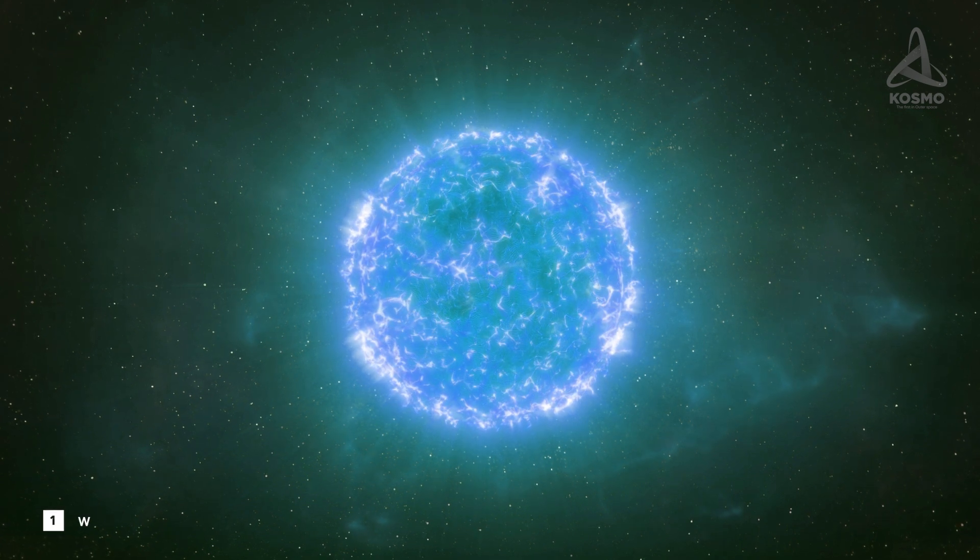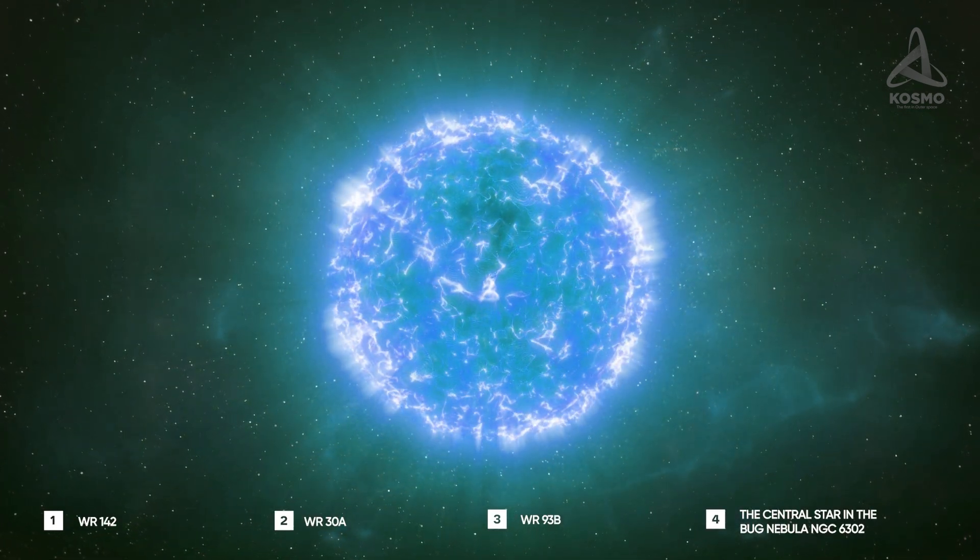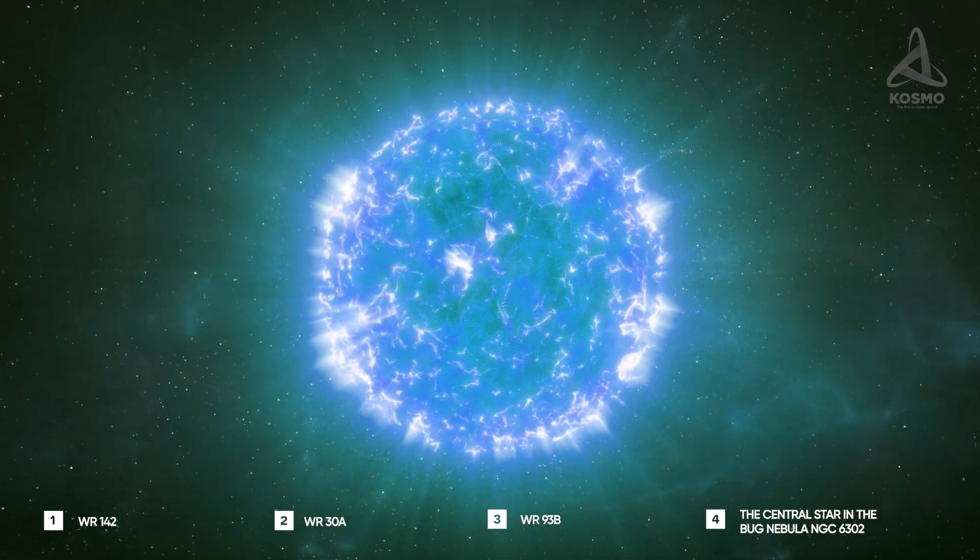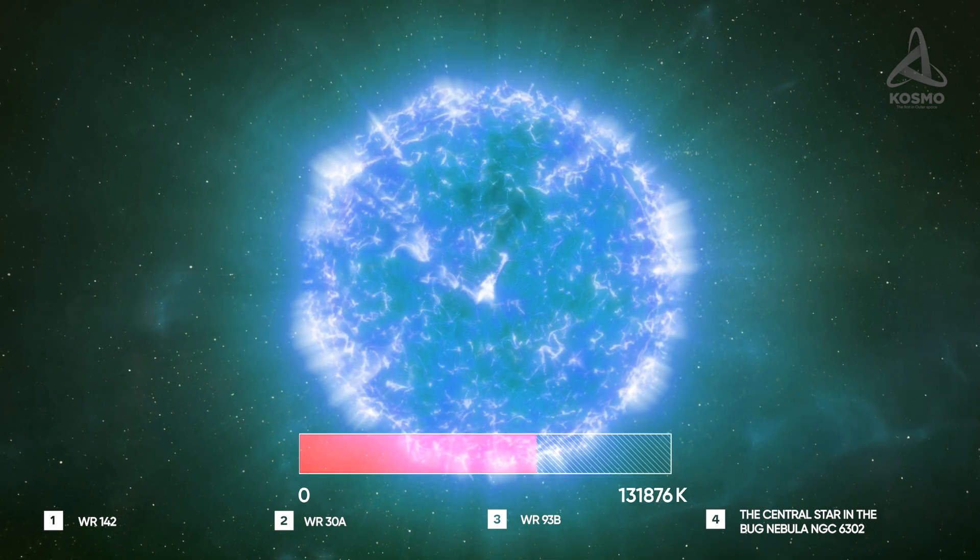WR102 is not the only outstandingly blistering place in the universe. For example, WR142, WR30A and WR93B, as well as the central star in the bug nebula NGC 6302, are as hot as around 200,000 Kelvin.